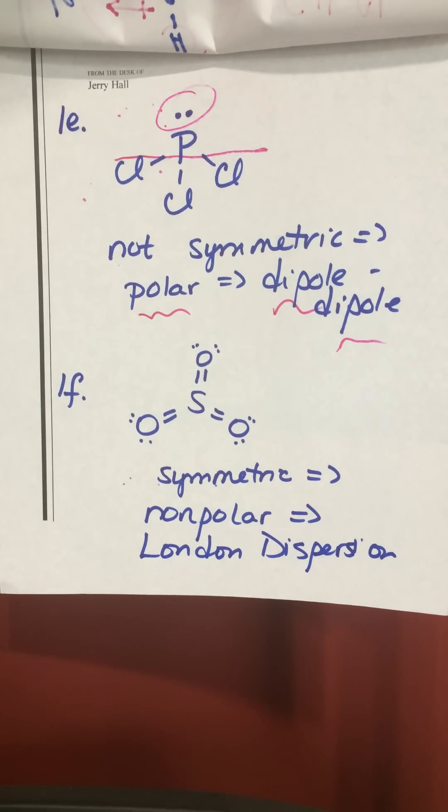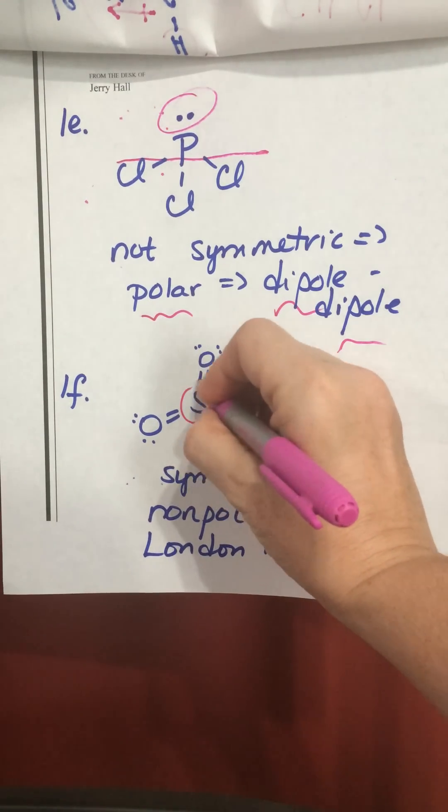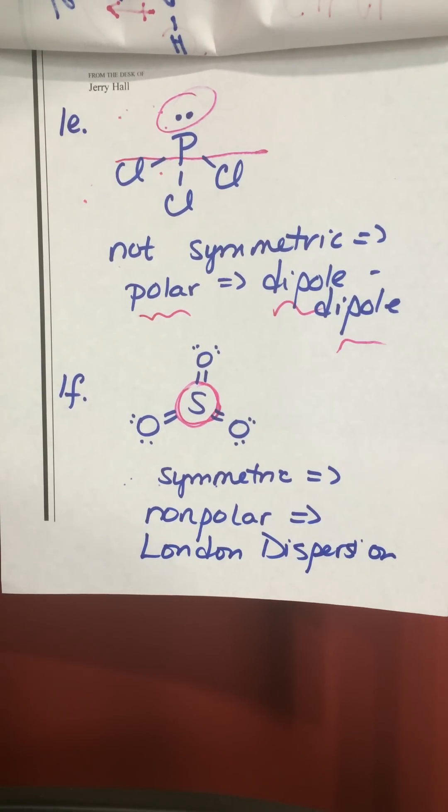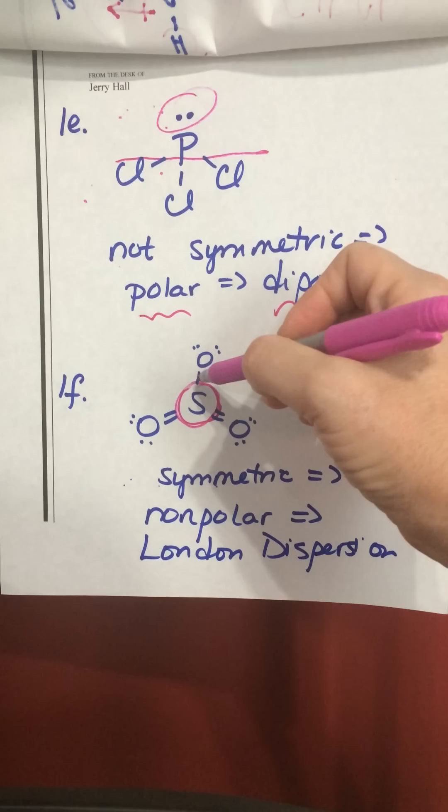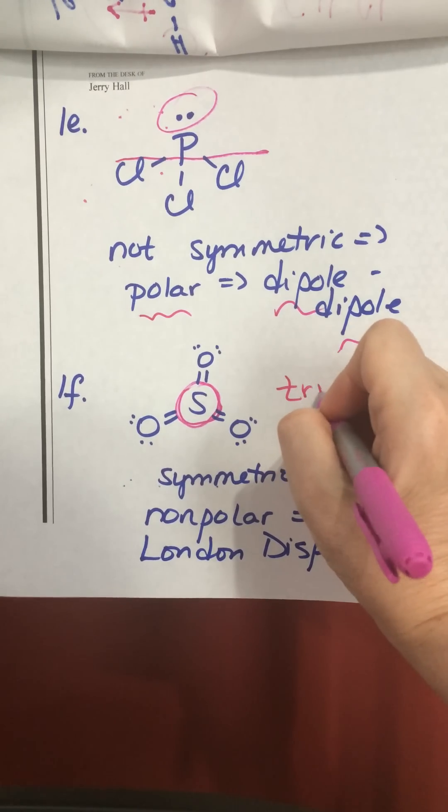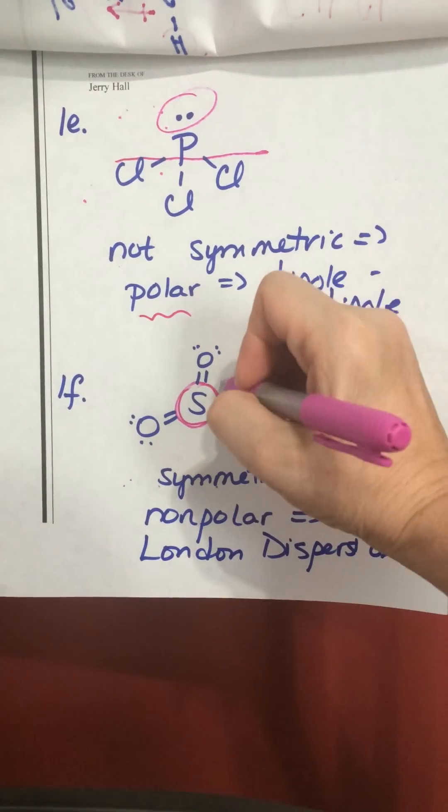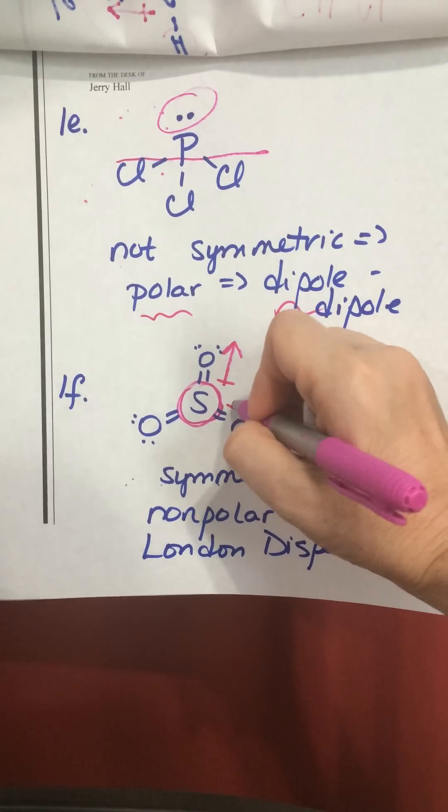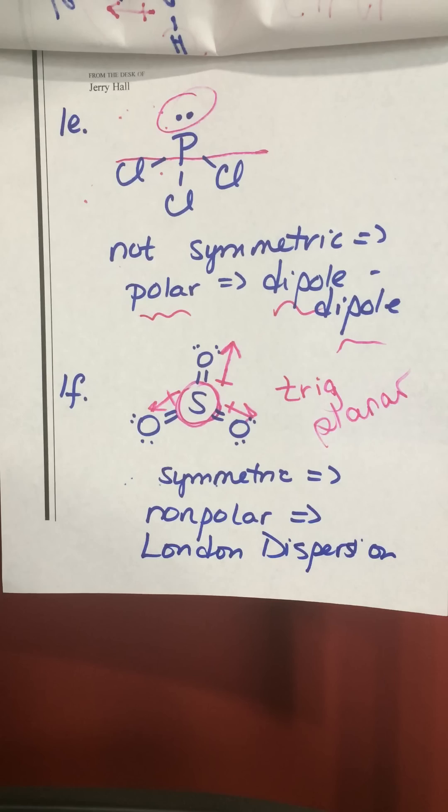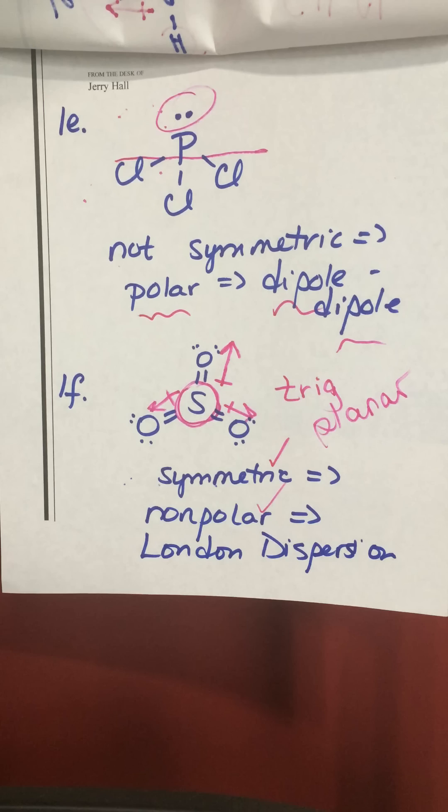The last one is sulfur trioxide. Sulfur is one of the elements that very regularly expands its octet to hold more than eight valence electrons. You can see in this structure two, four, six, eight, ten, twelve valence electrons around the sulfur, which is fine. The shape of this is trigonal planar. That means all of these bonds are in the same plane. Although you have three polar bonds, they all cancel out, so there's no net dipole, no net polarity in sulfur trioxide. It is symmetric, it's nonpolar, and therefore the only intermolecular force it can have is London dispersion.